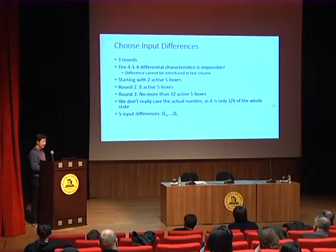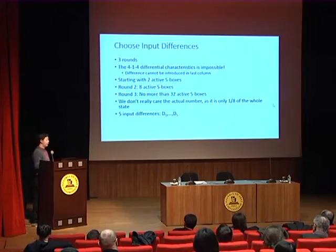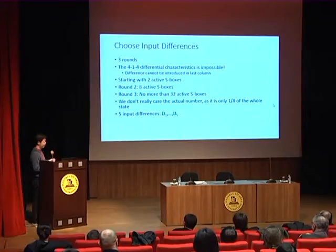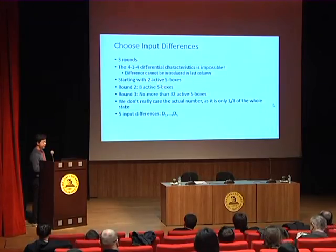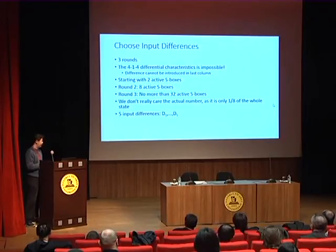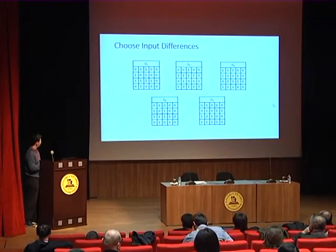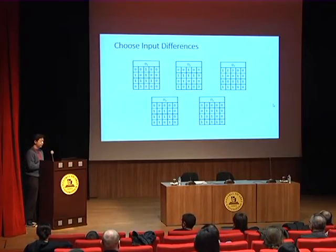For the three differential rounds, intuitively it is better to use just one bit and propagate one round forward and one round backward. But for Xoodyak, the input is restricted to only four or five columns, so we have to use two active S-boxes in the first round, at most eight active S-boxes in the second round, and no more than 32 active S-boxes after that. We found five input differences D1 to D5, each involving just one slice, which can be rotated to other positions in the state.